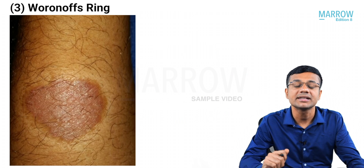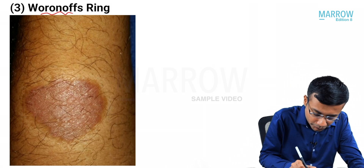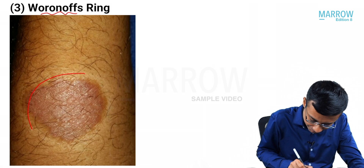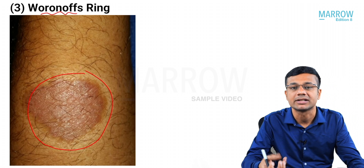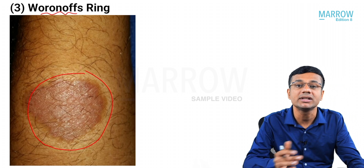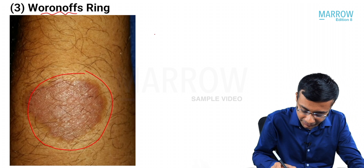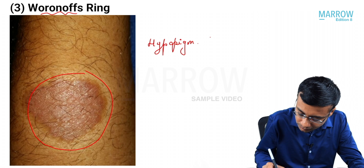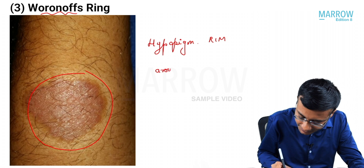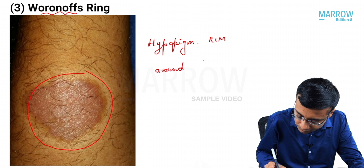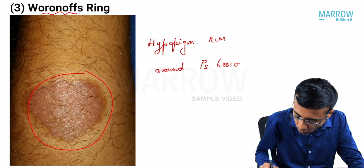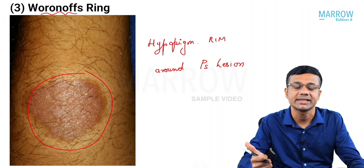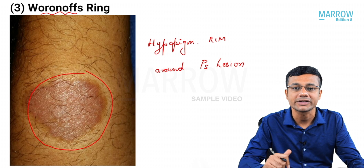The third important named feature is Woronoff's ring. This refers to the hypopigmented rim or margin seen around a psoriasis lesion. To summarize the named features: Auspitz sign, Koebner's phenomenon, and Woronoff's ring.